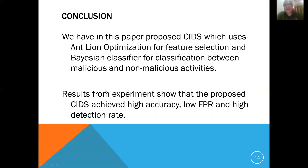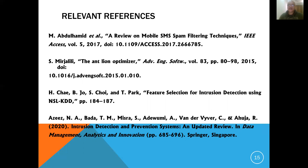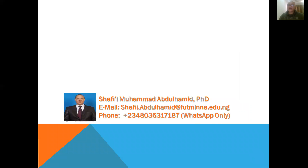In conclusion, this paper proposed a Cloud Intrusion Detection System (CIDS) using the Ant-Lion Optimization algorithm for feature selection and a Naive Bayes classifier for classifying malicious packages entering the cloud network. The experimentation results show that the proposed CIDS achieves high accuracy, low false positive rate, and high detection rate. It is proposed that such an algorithm can be applied for normal cloud computing systems. I thank all of you for listening to my presentation. Thank you very much.